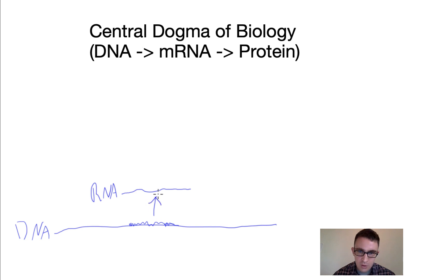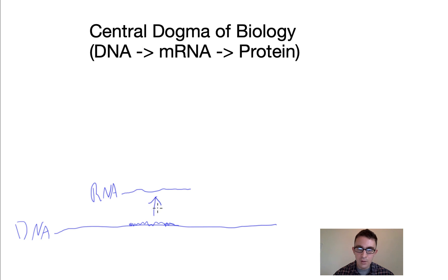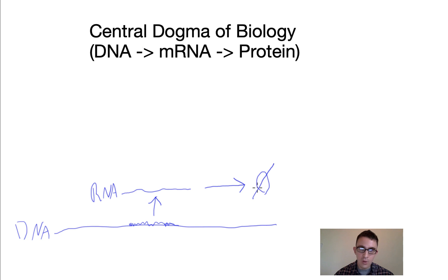This process is called transcription. A protein called RNA polymerase attaches to the DNA and uses a section of it as instructions for how to put together a strand of messenger RNA. The RNA exists for a while in the cell and at some point becomes degraded — this symbol represents decay rate, meaning the element eventually breaks down and disappears.